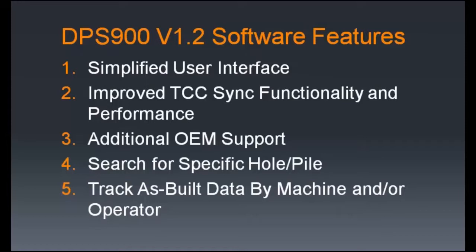Number two, we've improved TCC sync functionality and performance. When doing a lot of syncing with many as-built files — for instance, with a solar farm piling project — you've got thousands of as-built files, and that was really slowing down TCC with all the querying and searching it had to do to figure out what had been synced. With this release, we've added a sync.log file that keeps track of what's been uploaded, the size and date of that upload, so when we do a new TCC sync we're only uploading files that need to be uploaded. This significantly increases the speed of the synchronization process.